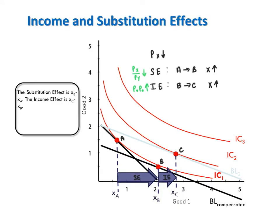In moving from bundle B to bundle C, the budget line shifts out, showing an increase in the affordable set or purchasing power, while the slope of the budget line remains the same. That's why movement from B to C reflects the income effect, which here increases the consumption of good x. Because the increase in purchasing power causes an income effect that increases consumption of x, this shows x to be a normal good.